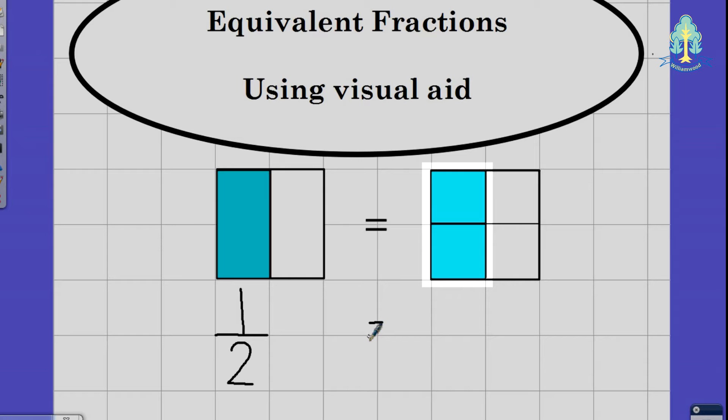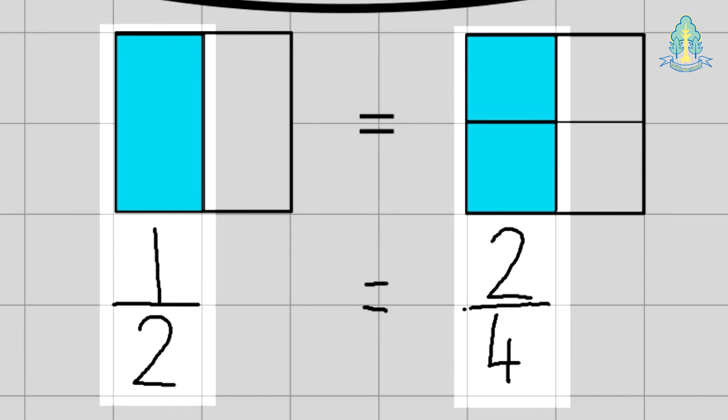We then recognise in this fraction we have two parts shaded creating our numerator and four parts altogether creating our denominator, highlighting that one half is equal to or equivalent to two quarters.